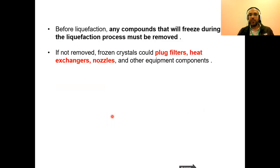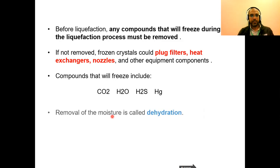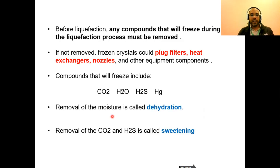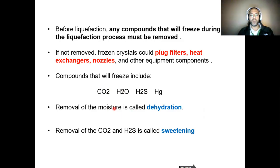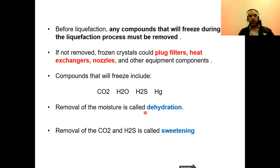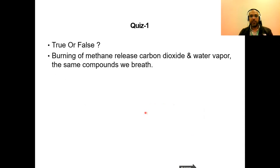If we do not remove these freezing compounds, we will have plugged filters, plugged heat exchangers, nozzles, and many process subsystems. Removal of moisture from the gas is called dehydration. Removal of CO2 and H2S is called sweetening. These two operations will be studied in different series of videos.